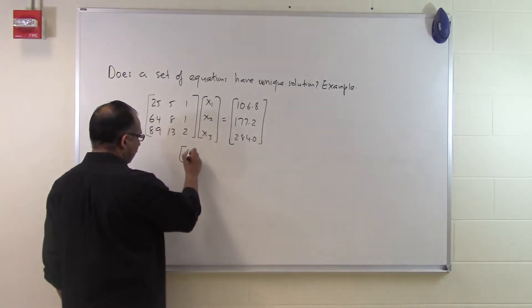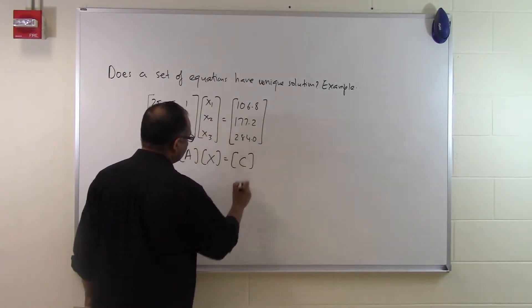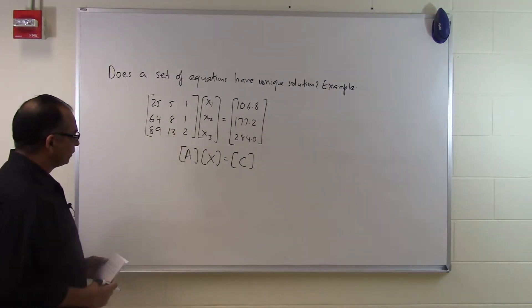So if you write it in the matrix form, in a shortened symbolic matrix form we have Ax equals C. So what we have to check is, what we ask is, can you tell us whether it has a unique solution?